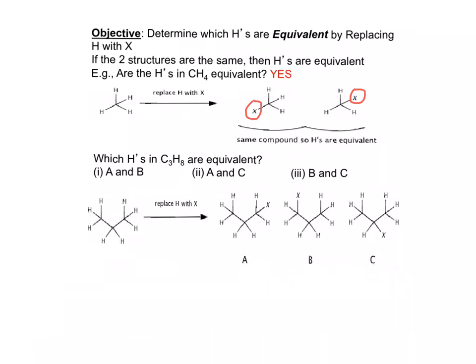Now let's take a look at C3H8. Which H's in this compound are equivalent? Stop the video and think about that for a second. The answer is A and B — these protons are equivalent because A and B are the same compound.